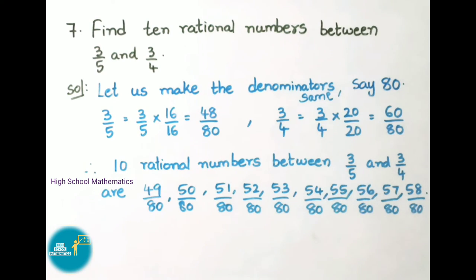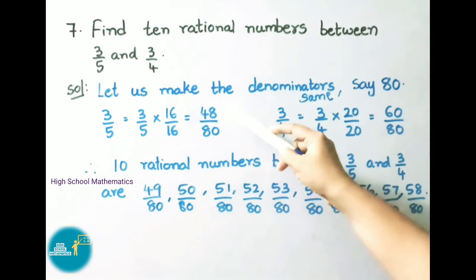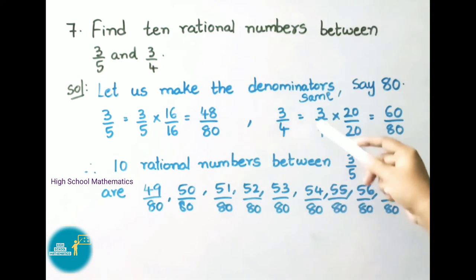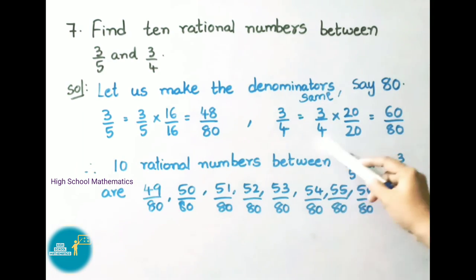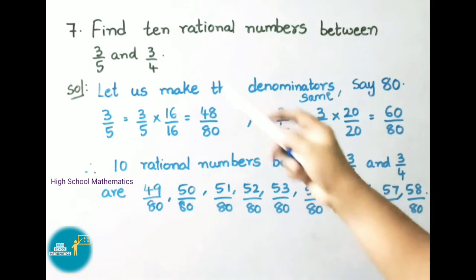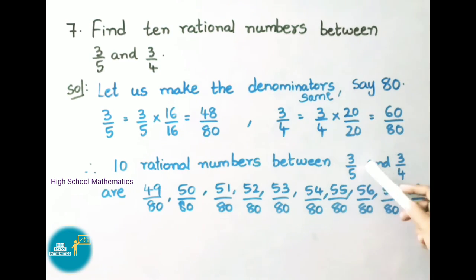See now question number 7: Find 10 rational numbers between 3/5 and 3/4. Let us see the solution. Let us make the denominator the same, say 80. For 3/5, 5 × 16 = 80, so we multiply numerator and denominator by 16: 3 × 16 = 48, 5 × 16 = 80. Next, for 3/4, 4 × 20 = 80, so we multiply numerator and denominator by 20: 3 × 20 = 60, 4 × 20 = 80. Therefore 10 rational numbers between 3/5 and 3/4 are: 49/80, 50/80, and so on up to 58/80. These are the 10 rational numbers between 3/5 and 3/4.